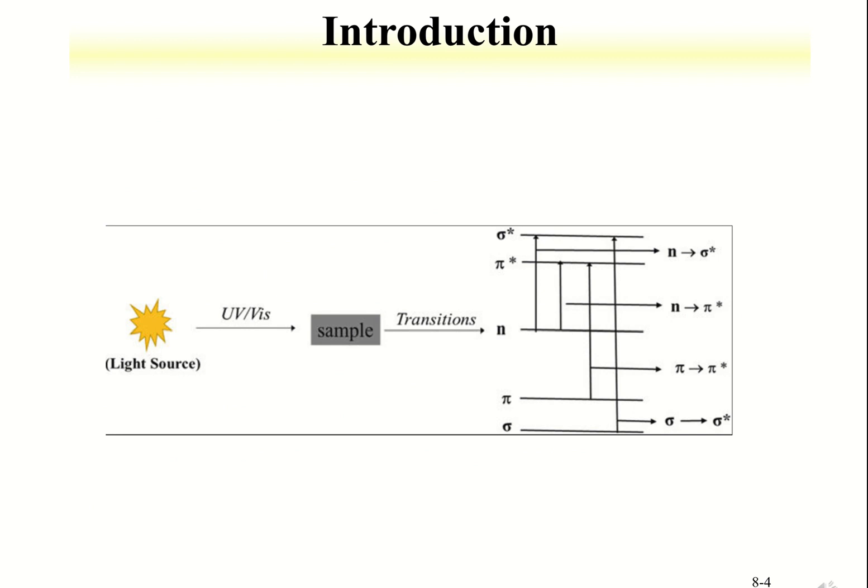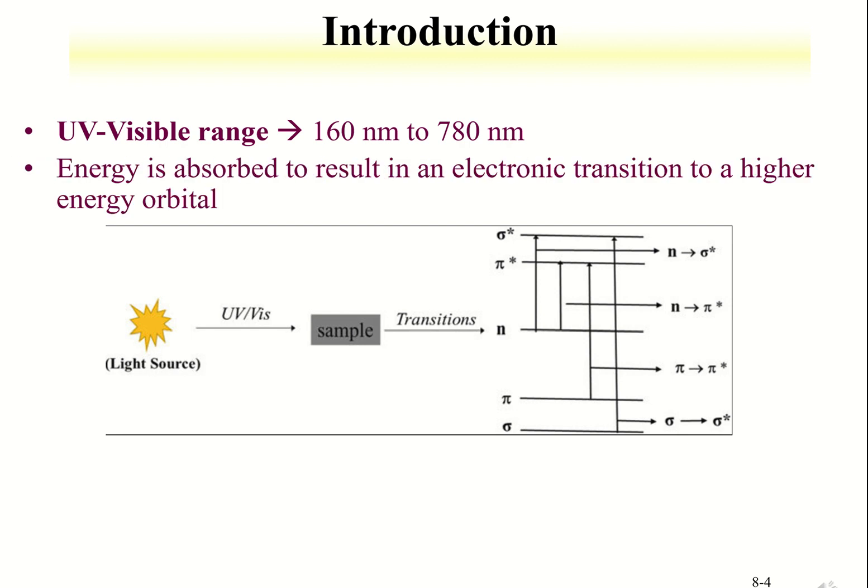A UV-visible spectrometer detects a compound that absorbs radiation in a range between 160 to 780 nanometers, which covers from UV to visible light range. This means that the compound is most probably colored, or it has a conjugated system in its molecular structure. A conjugated system allows energy of this radiation range to be absorbed, which causes an electronic transition.